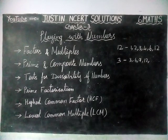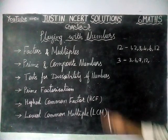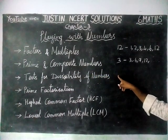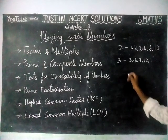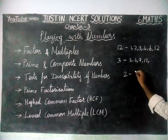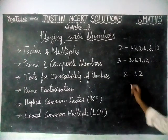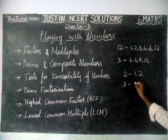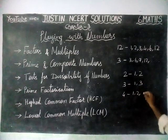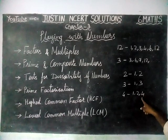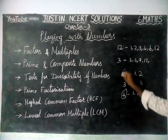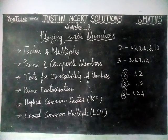And next one, prime and composite numbers. What is a prime number? If a number has only 1 and itself as factors, it is called a prime number. For example, number 2 has factors 1 and 2 only. Number 3 has factors 1 and 3 only. But number 4 has factors 1, 2, and 4 — more than 2 factors. So 4 is not a prime number, but 2 and 3 are prime numbers.